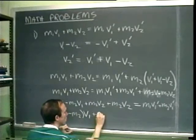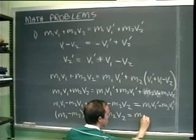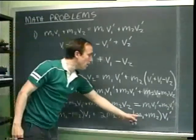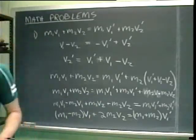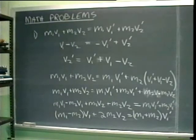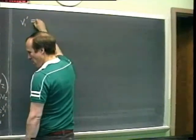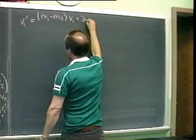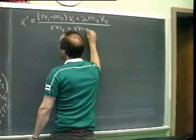This part is just 2M2V2, so I don't really have to factor it out. Now I'll divide both sides by M1 plus M2, and I'm all done. I'll put V1 prime on the left-hand side of the equation — the thing you're solving for should go on the left. And we're all done.